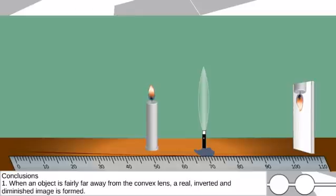Conclusions: 1. When an object is fairly far away from the convex lens, a real inverted and diminished image is formed.